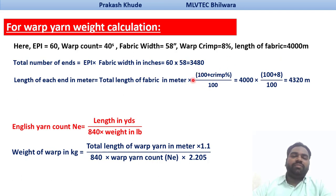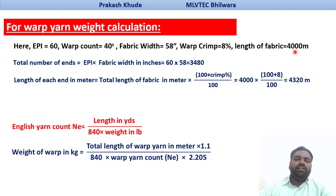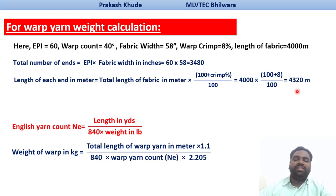But we need to multiply by the crimp percentage. Why do we need to add this crimp percentage? Because the actual length of the fabric is 4000 meters, but for the production of this 4000-meter fabric we need the yarn length to be more than that because of the crimp. So how you can get to know the length of each end in meters: the length of the fabric is 4000, and if you add 8 percent to this, you get the total length of yarn required for each end, which is 4320 meters. Around 320 meters of extra length is going into your crimp.